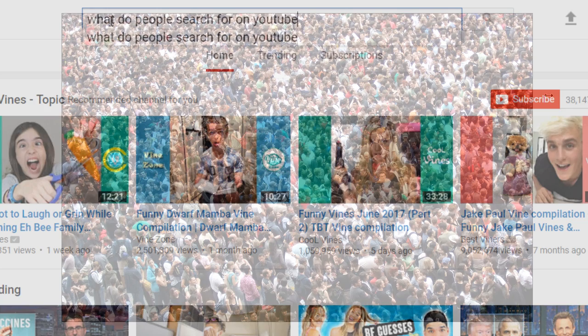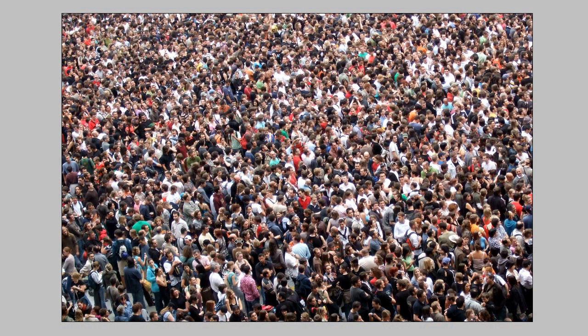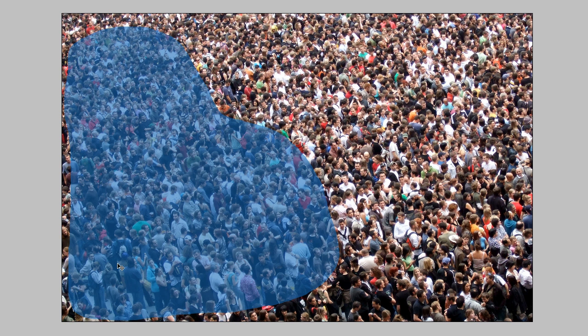Let me give you a quick example to demonstrate the logic behind why this works. Let's say we have a large group of people attending a Facebook marketing conference. This large group is interested primarily in Facebook advertising — and that's the way they think about it. Because there are so many of them, and they don't all search the exact same way, when they go to YouTube and search for videos related to Facebook advertising, they create many child search terms.